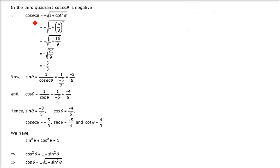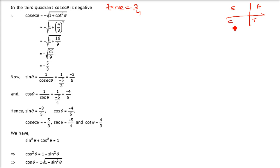The next question: tan θ = 3/4 and θ is in the third quadrant. In the third quadrant, only tan is positive; cos, sec, sin, and cosec are negative. Cot θ = 4/3 (reciprocal of tan). We can use sec²θ = 1 + tan²θ or cosec²θ = 1 + cot²θ.